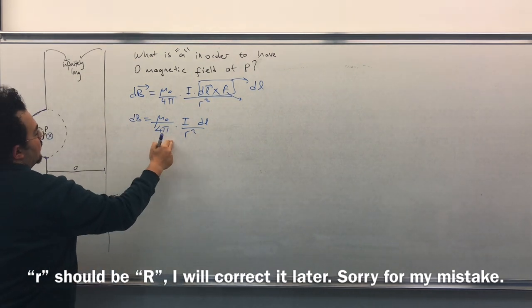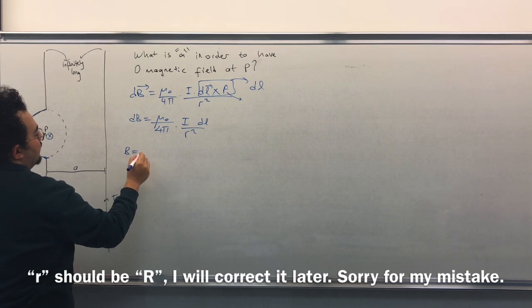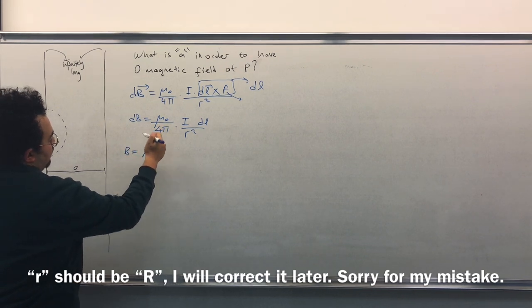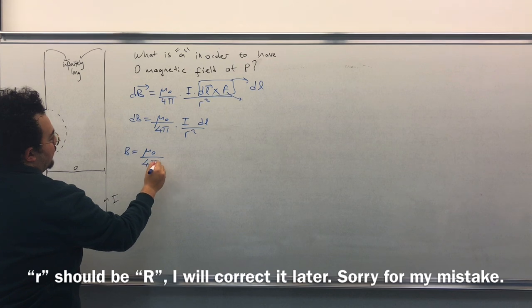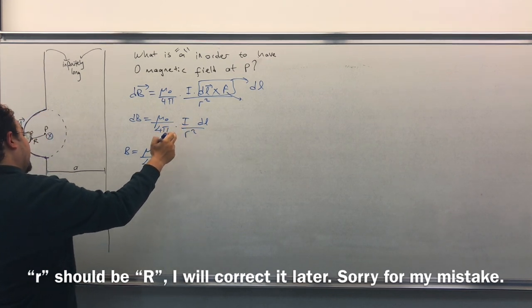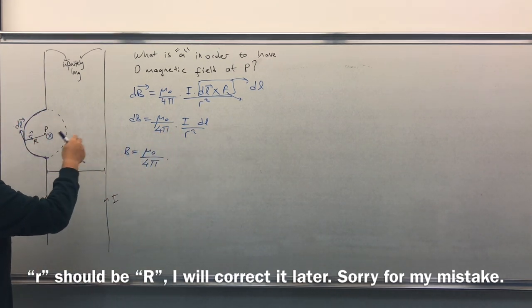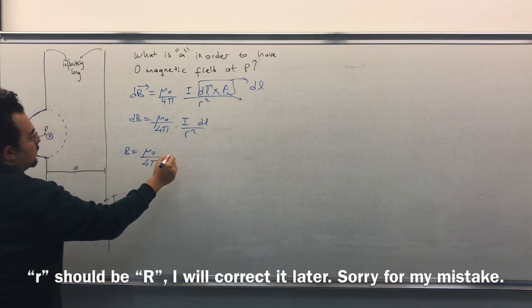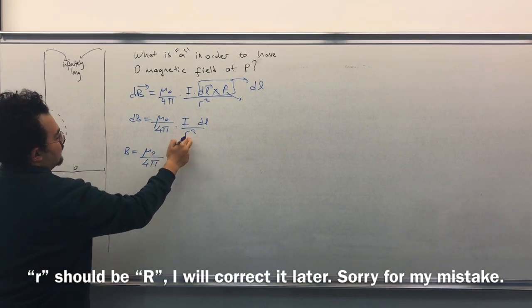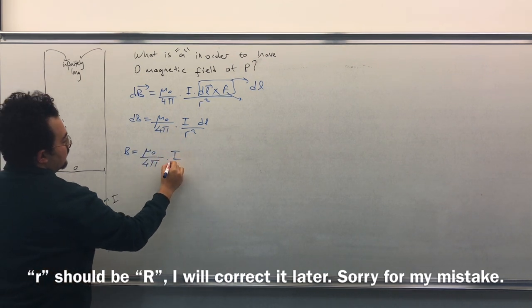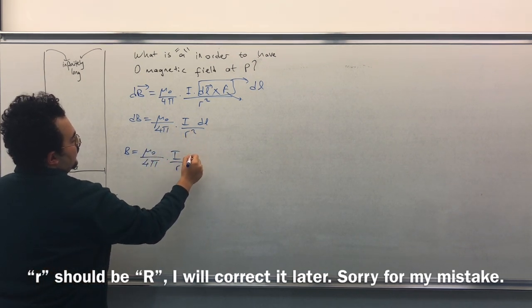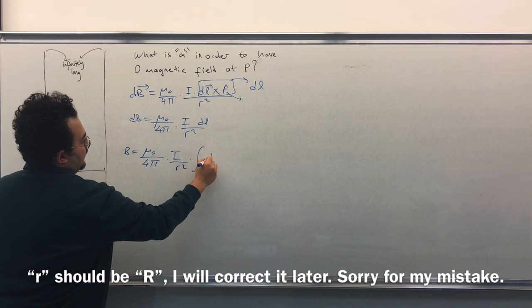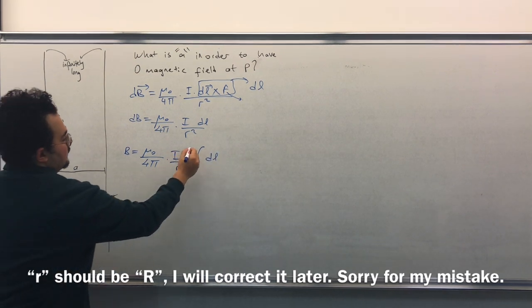Taking integral of both sides we will have B equals to mu zero over 4 pi times I is constant for all circles, so it goes out, and again r square is constant times integral dL.